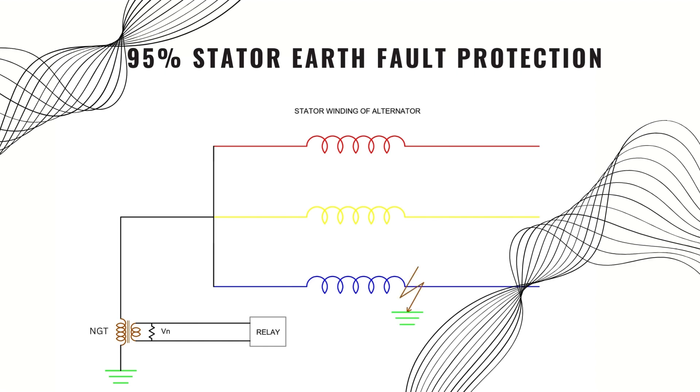But what will happen if any earth fault happens in any of these windings? Let's see. Look when any earth fault happens, the voltage across the NGT becomes the voltage across the neutral and fault point of the faulty winding.